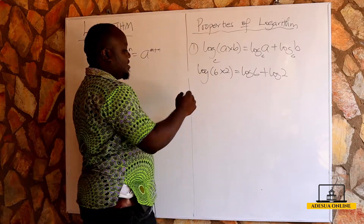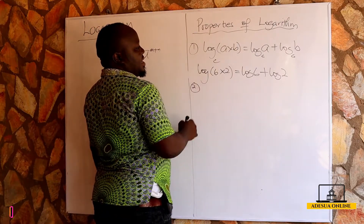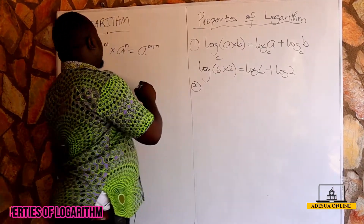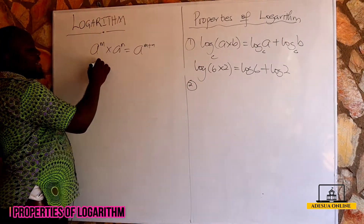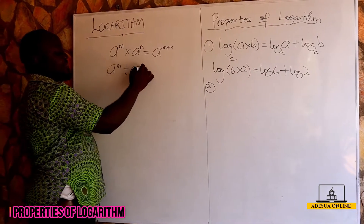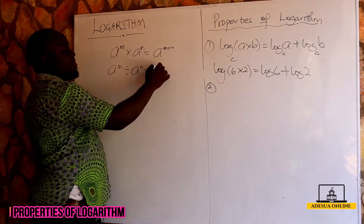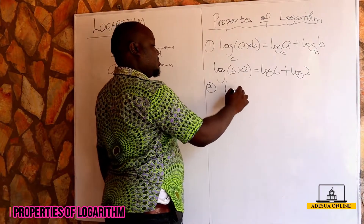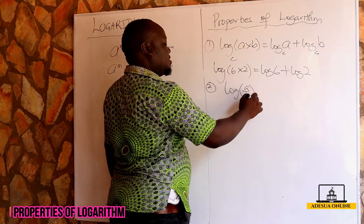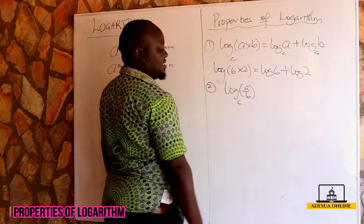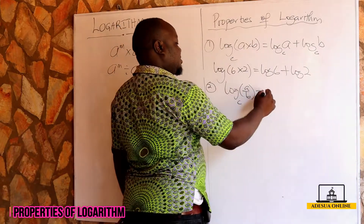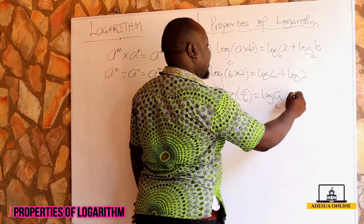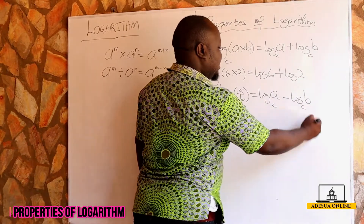Now for division: remember in indices, a raised to the power m divided by a raised to the power n became a raised to the power m minus n. The same way, if we have log a over b all to the base c, this becomes log a to the base c minus log b to the base c.